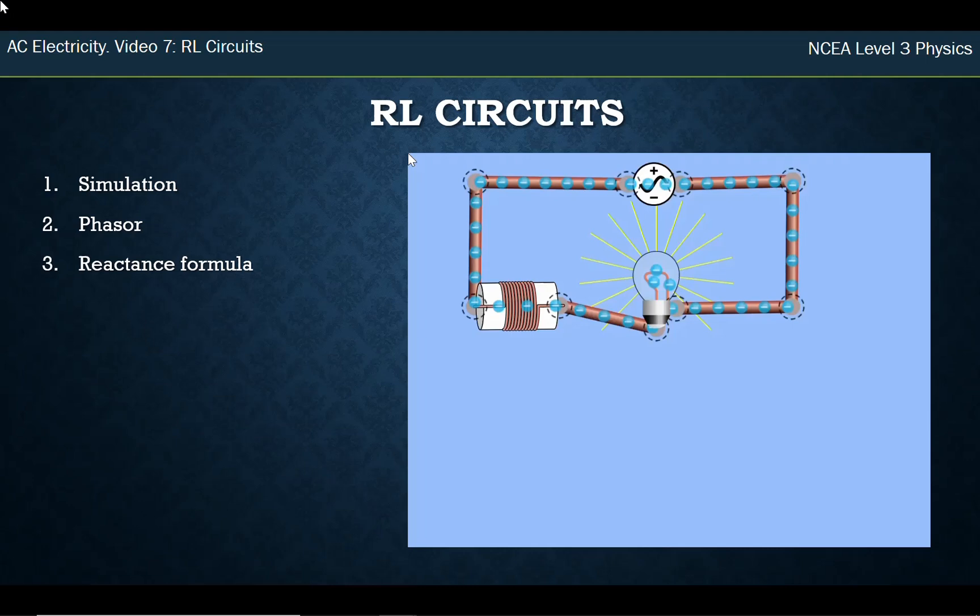Hello, this is Mr. McGovern. This is the seventh video in the AC electricity series where we're looking at resistor-inductor AC circuits. We'll do another simulation, this time with an inductor, set up a capacitor and our light bulb acts as our resistor. We'll talk about the phasor diagrams and then the reactance formula for inductors.